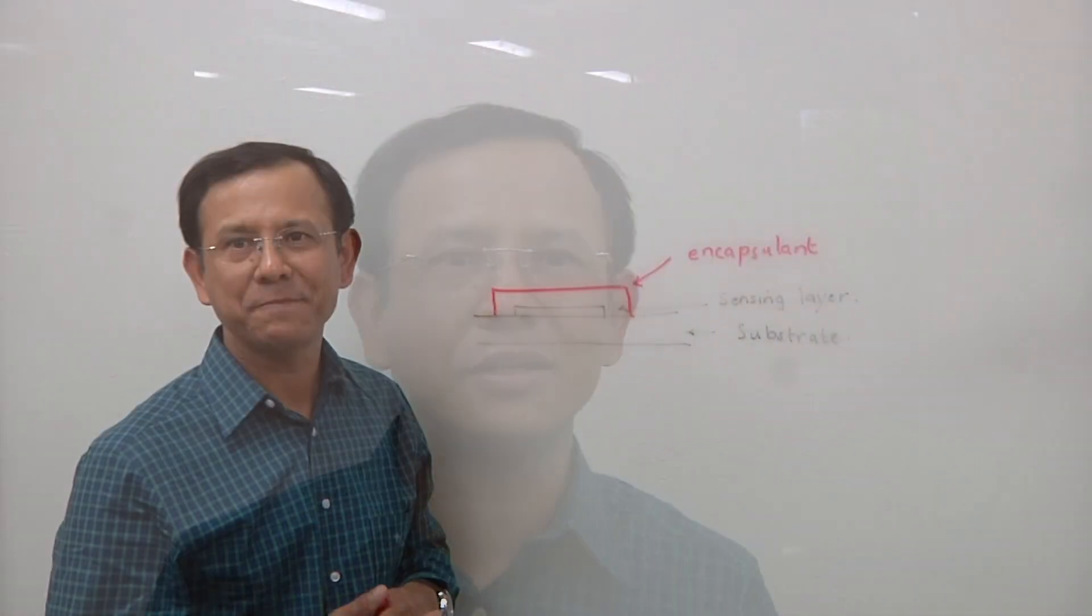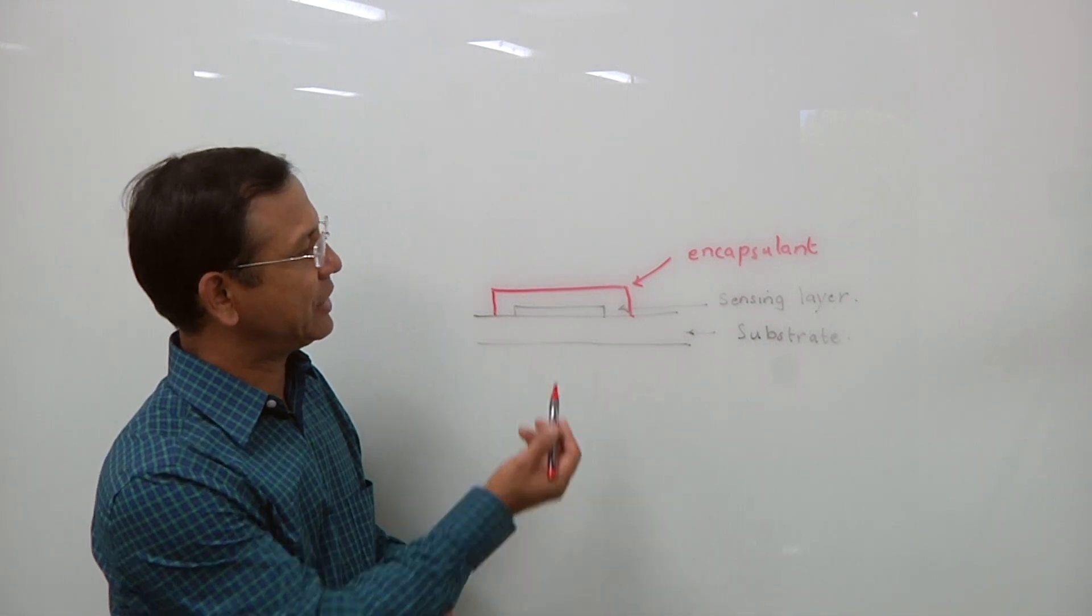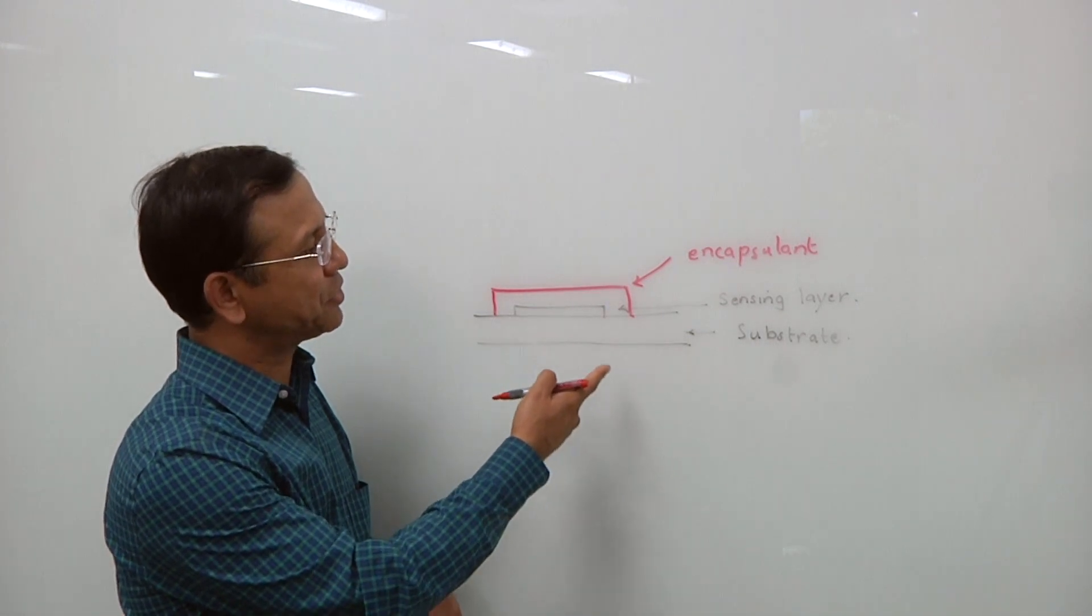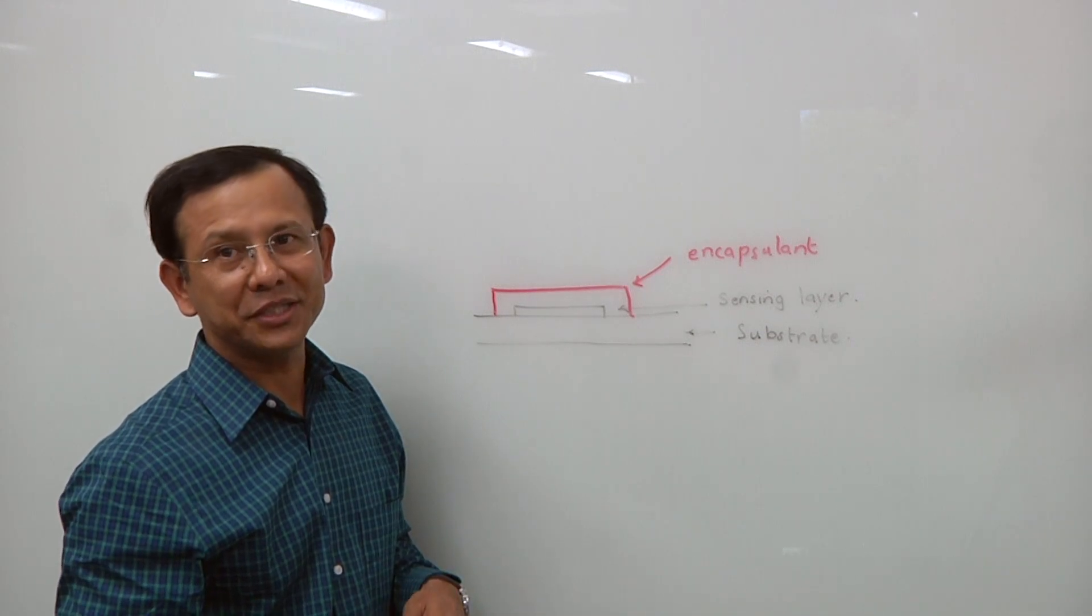Why don't you draw this out for us? Sure. Vijay, what are we looking at here? Here we are looking at the diagram and different components, material components that is involved on making a printed temperature sensor.